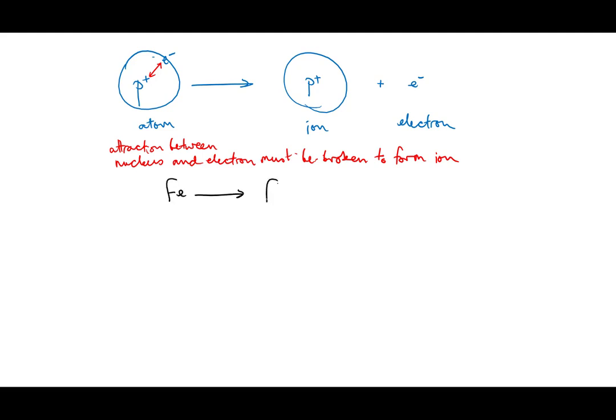The first ionization for an atom is when you take the neutral atom and you remove one electron from it, which forms a plus one ion. As you remove successive electrons, you also have the second ionization and the third ionization and so on, until you run out of electrons.